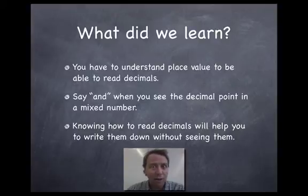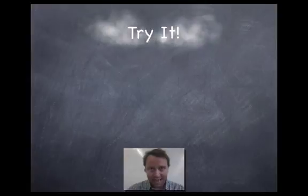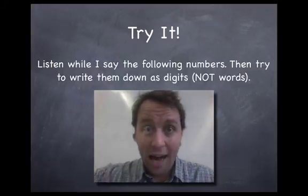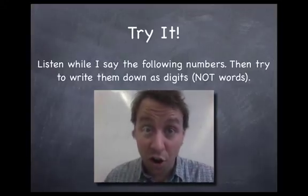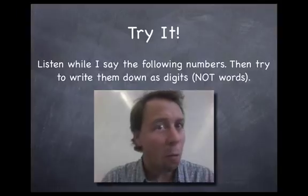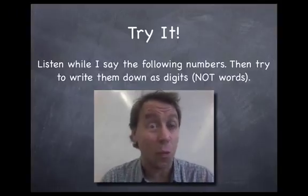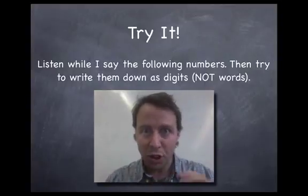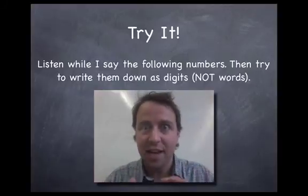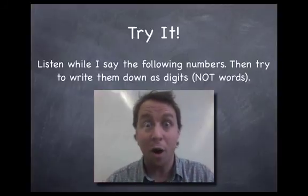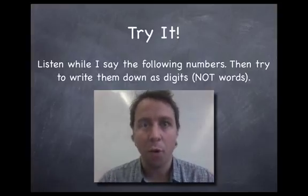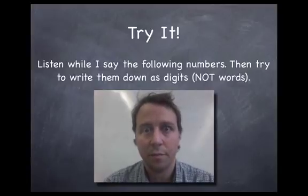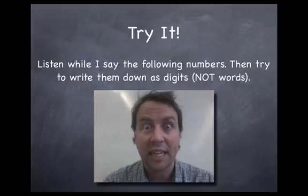And we also learned that knowing how to read decimals is going to help you to write them down without seeing them. And I'm going to test you right now. Are you ready? You're going to try it. Can you do this? Yes, Mr. C. We can do it. All right. Listen while I say the following numbers. And then you're going to try to write them down as digits. That means not words. So you're going to write them down as numbers. I'm going to say three numbers. You try and write them down. You can back up the video and watch it as many times as you have to in order to be able to do this. But I want you to try it. And then I want you to check it with somebody, either your teacher or your mom or your grandma or somebody who knows what they're doing. Here's the first one. Number one. One hundred and three thousandths. One hundred and three thousandths. Try to write that down in digits.